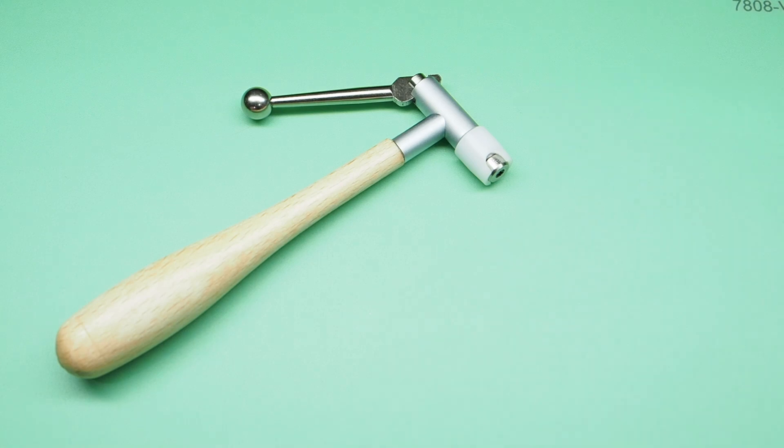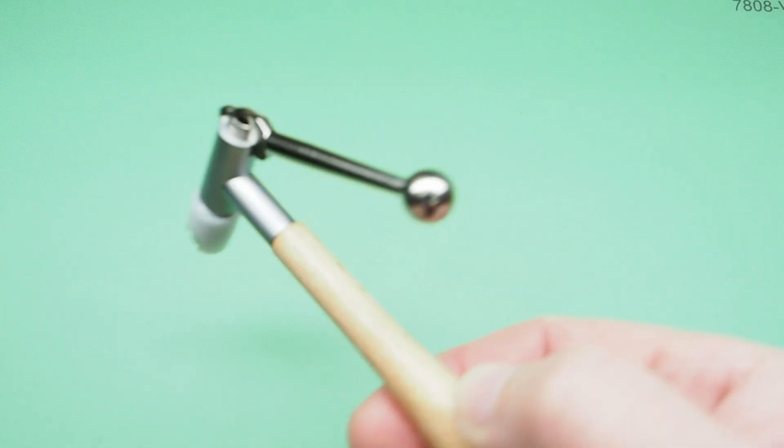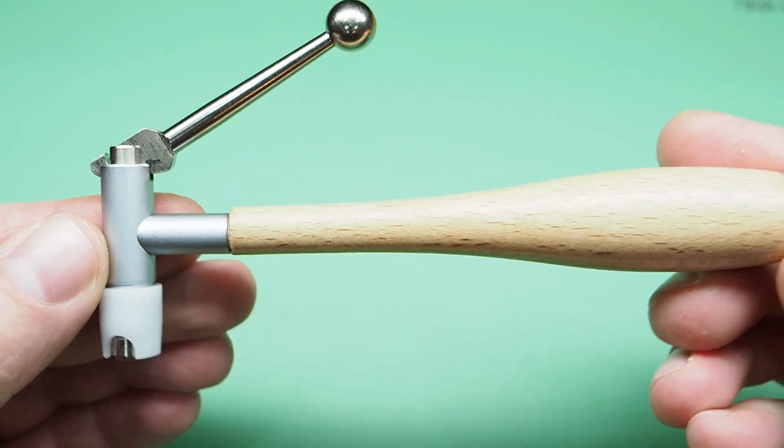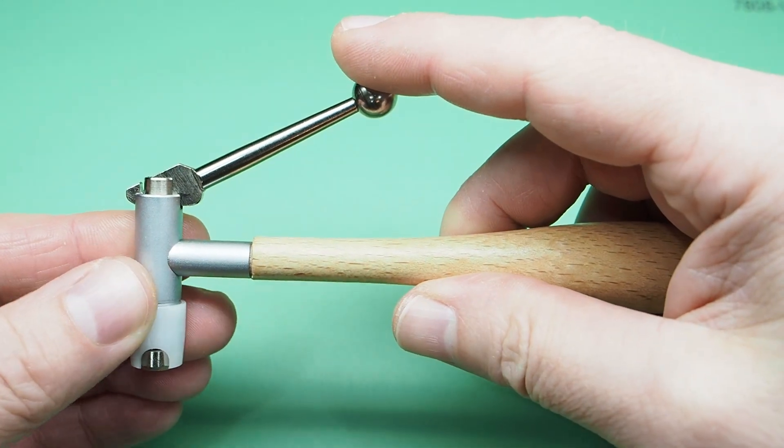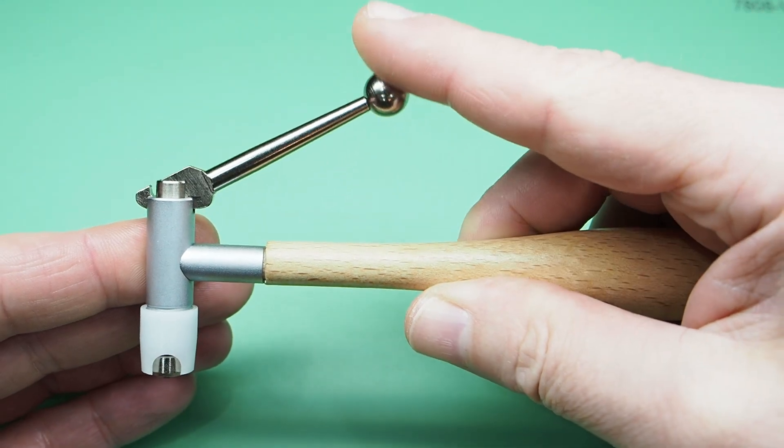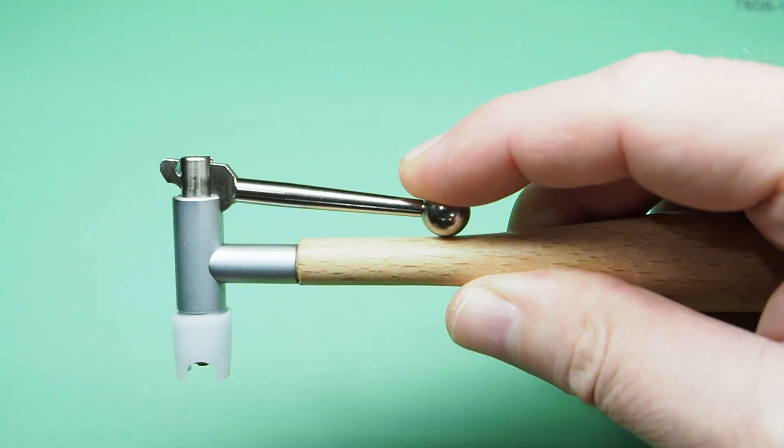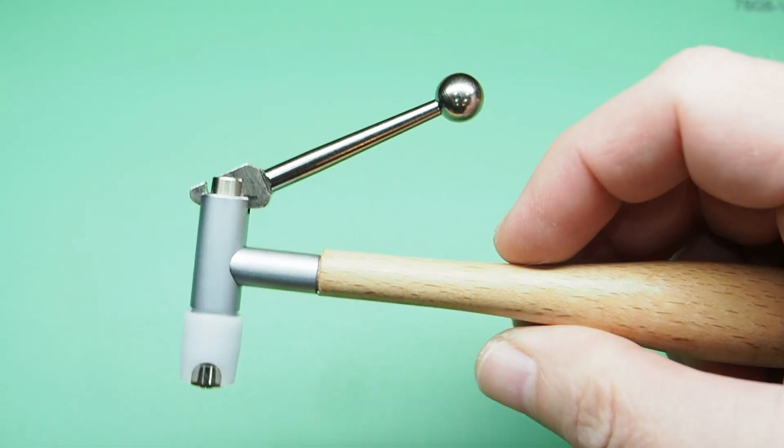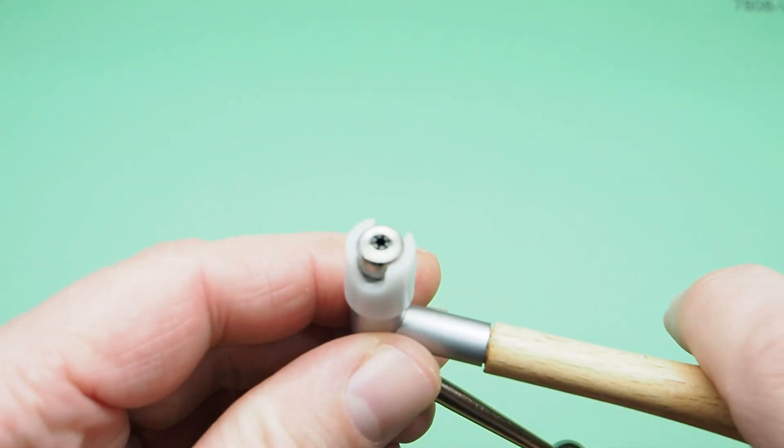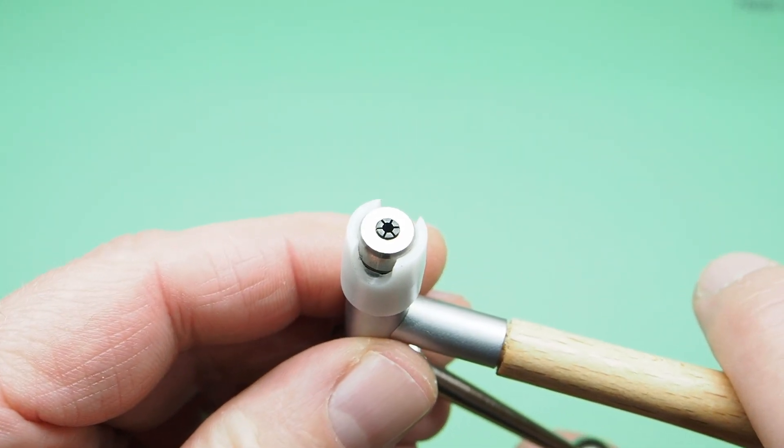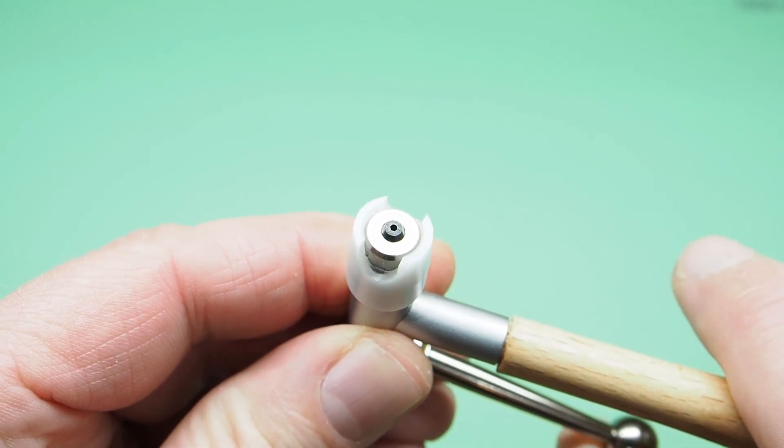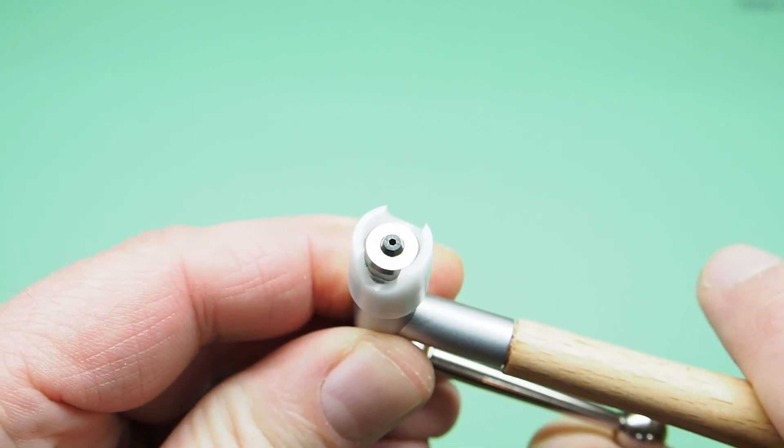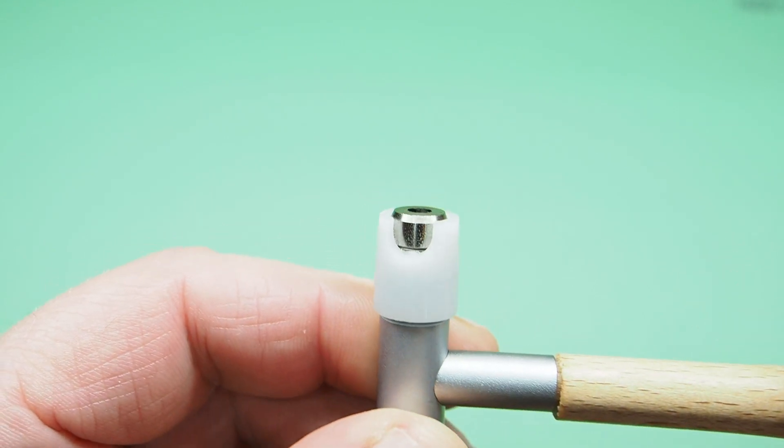Let's have a look at them in detail and we'll start with the Bergeon 4854. We have a wooden handle and a steel lever. As you can see, pressing the lever down lifts the shaft. Here is a collet and as you press down on the lever the collet will close, grip the Canon Pinion, retract and remove the Canon Pinion.